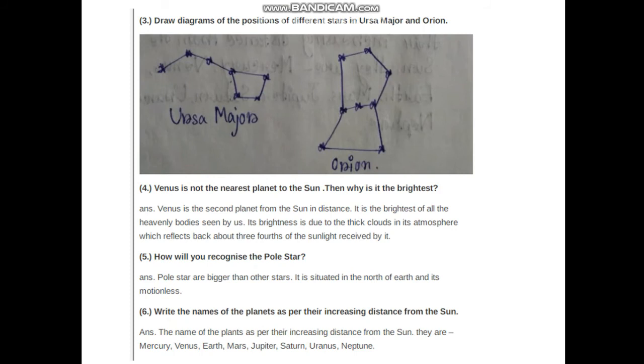Venus is the second planet from the sun in distance. It is the brightest of all the heavenly bodies seen by us. Its brightness is due to the thick clouds in its atmosphere which reflect back about three fourths of the sunlight received by it. How will you recognize the pole star? All stars are bigger than other stars. It is situated in the north of earth and is motionless.